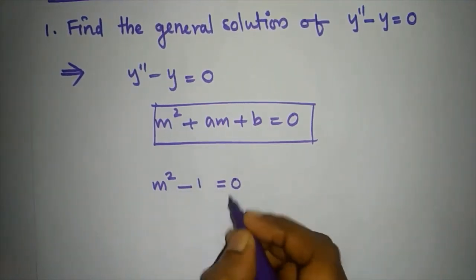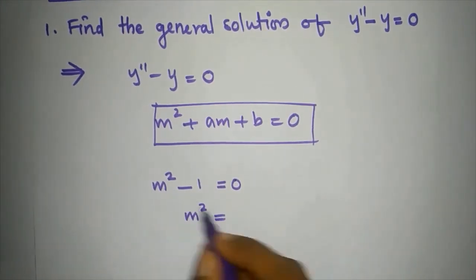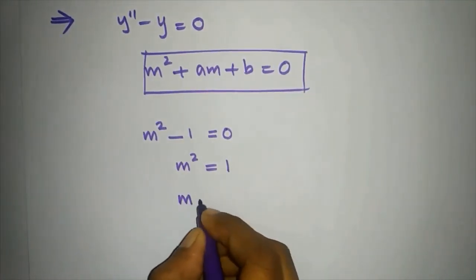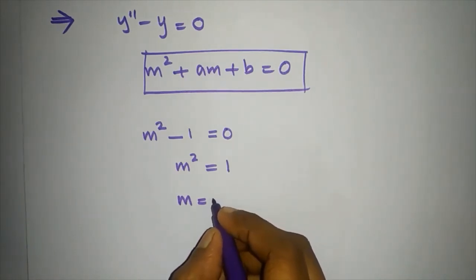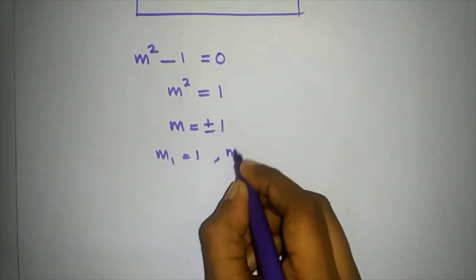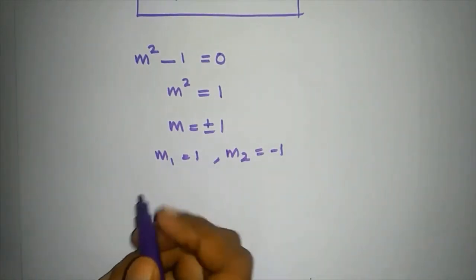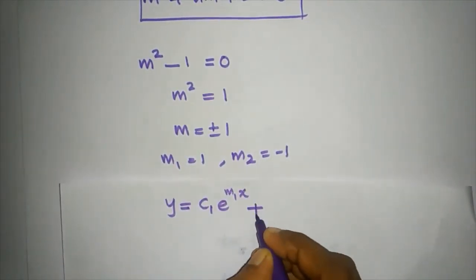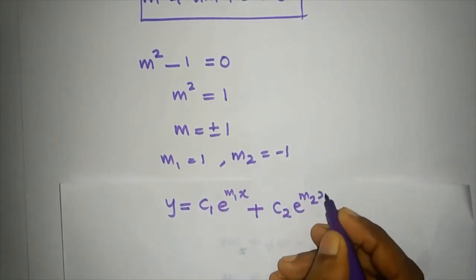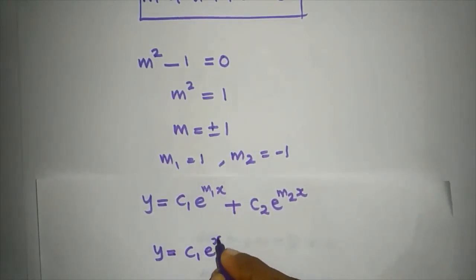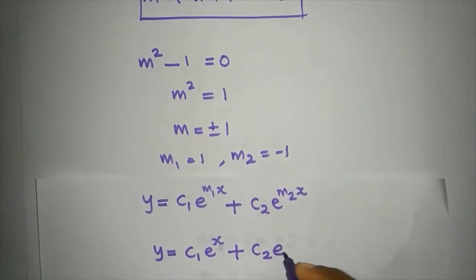So m squared minus 1 equals 0, which gives m squared equals 1, therefore m equals plus or minus 1. So m1 equals plus 1 and m2 equals minus 1. These are distinct roots, so the general solution is y equals c1·e^x plus c2·e^(minus x).